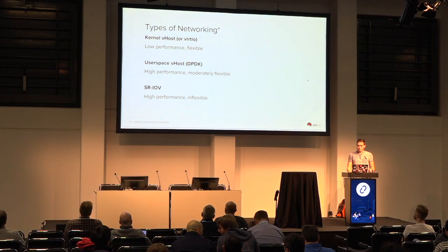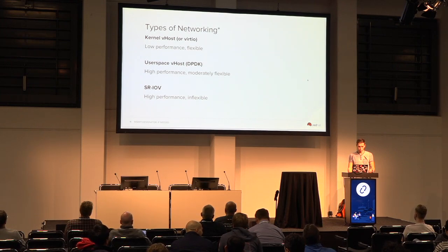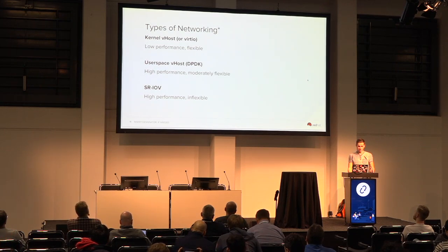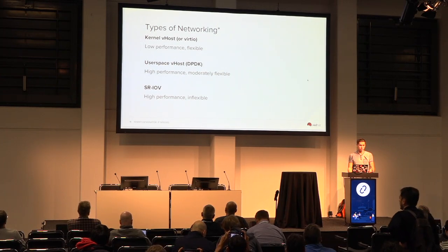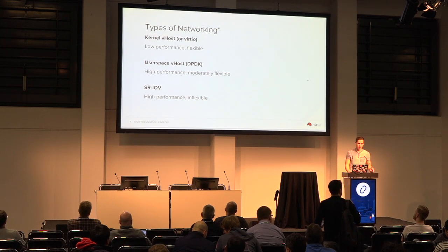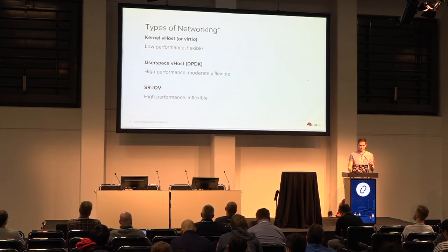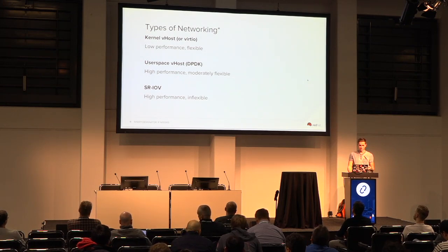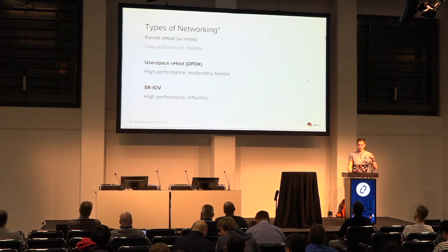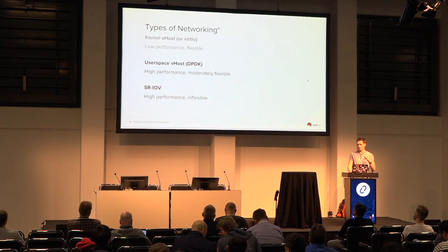So when we talk about the kind of networking that's available — there's a lot more, because networking is weird and special — but the three that most people spend their time talking about are: kernel vhost or legacy virtio, user space vhost which is generally typified by things like DPDK vSwitch, and then SRIOV. Each of these comes with their own pros and cons. I've listed flexibility versus performance, but there's a lot more to take into consideration, including cost. The most useful comparison is between user space vhost and SRIOV, because these are the most likely ones you'd see in an NFV-based deployment.